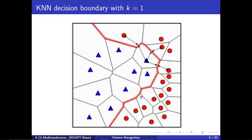If you try to closely look into this, it will behave like a decision boundary between class 1 and class 2. If your test point is somewhere here, the nearest one is the red color sample — that is class 2. When you have a sample somewhere here and the nearest one is a blue sample, that belongs to class 1. So this behaves more or less like a decision boundary — a very complex nonlinear decision boundary, not a linear one.